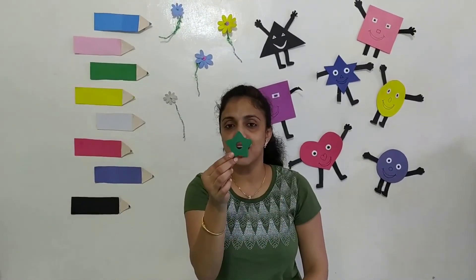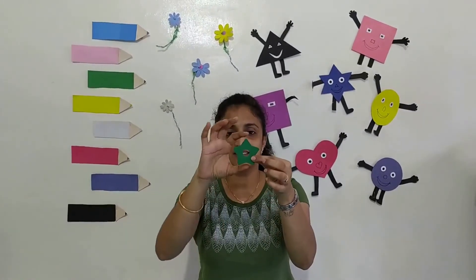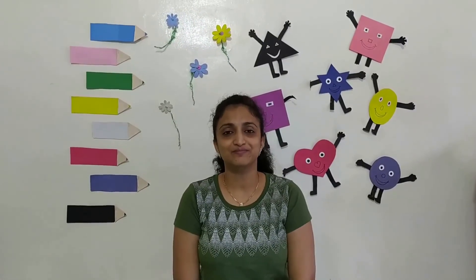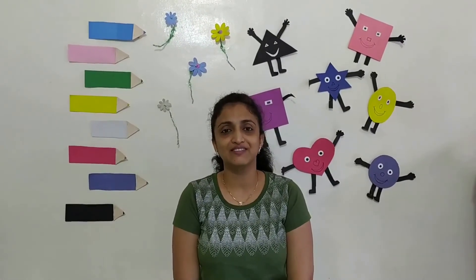And what is this? This is a star. Twinkle, twinkle, little star. This is the shape of a star. That is all for today, children. Have a great day. Thank you.